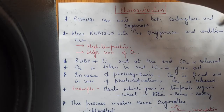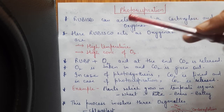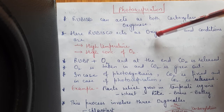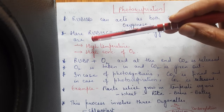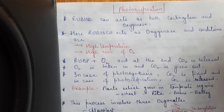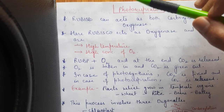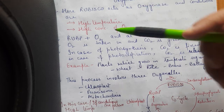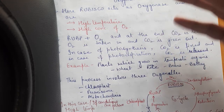So there are certain conditions under which Rubisco acts as an oxygenase. Rubisco acts as oxygenase under conditions of high temperature and high concentration of oxygen. When the temperature is higher and oxygen concentration is higher, Rubisco acts as oxygenase.